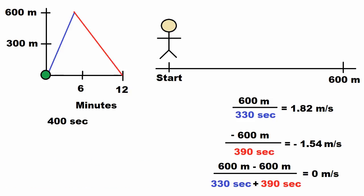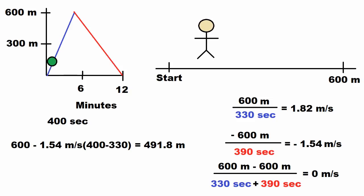So now let's say we want to find out how far away from the starting point we are after 400 seconds. So 400 is greater than 330, so that means we've already gone 600 meters and we're on our way back. So 600 meters minus 1.54 meters per second times 400 minus 330 will give us our answer.